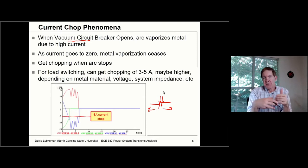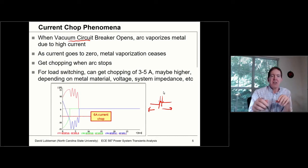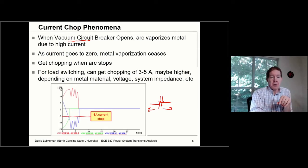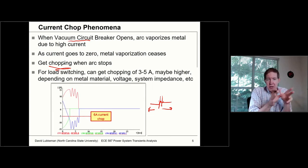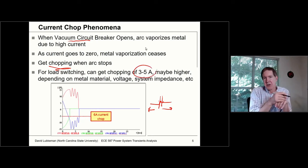Since you have this operating in a vacuum, it's possible that you can get this vaporization to cease before the current actually hits a natural zero — and then you get this chopping action. He talks about in this paper that for load switching, these chopping levels could be in the three to five ampere region, maybe higher, depending on the material, the circuit breaker, the voltage level, and the system impedances.